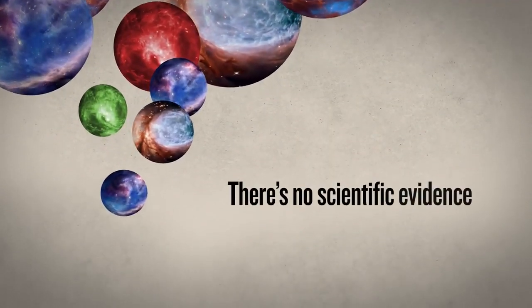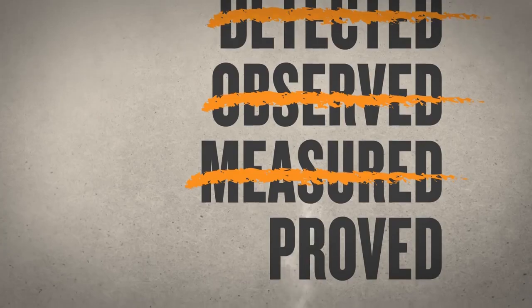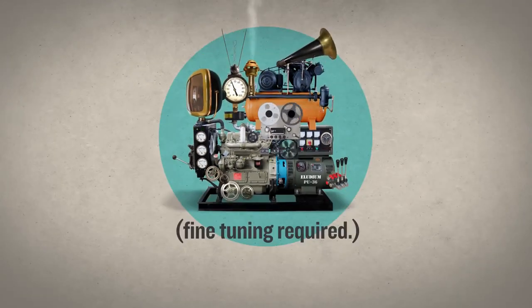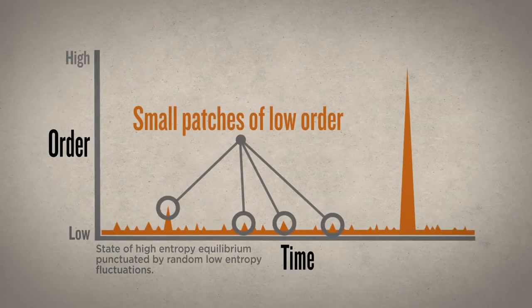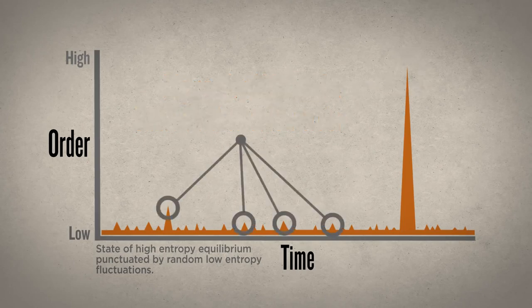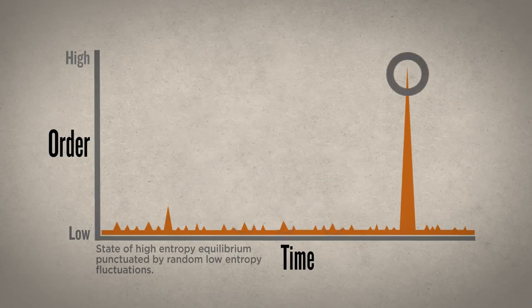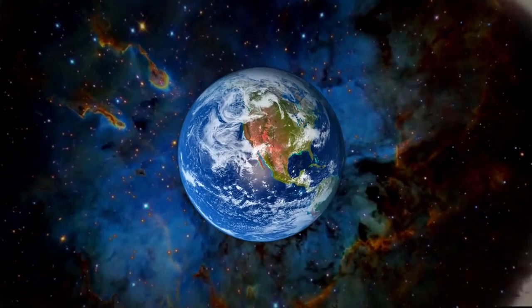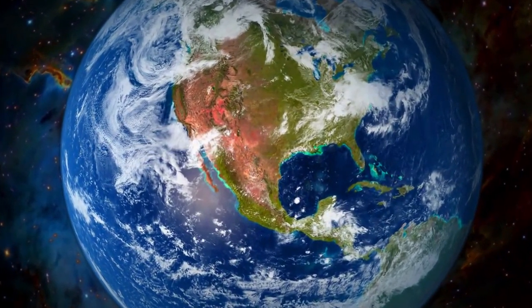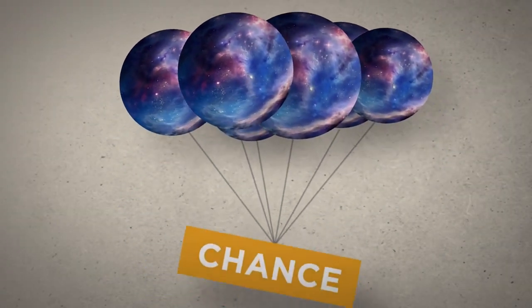However, there's no scientific evidence for the existence of this multiverse — it cannot be detected, observed, measured, or proved. And the universe generator itself would require an enormous amount of fine-tuning. Furthermore, small patches of order are far more probable than big ones, so the most probable observable universe would be a small one inhabited by a single, simple observer. But what we actually observe is the very thing we should least expect: a vast, spectacularly complex, highly ordered universe inhabited by billions of other observers. So even if the multiverse existed, it wouldn't do anything to explain the fine-tuning.